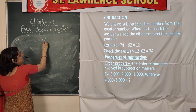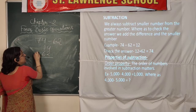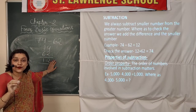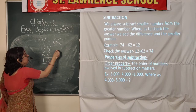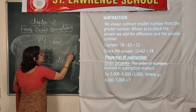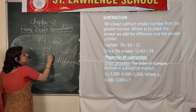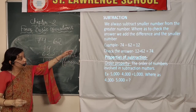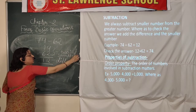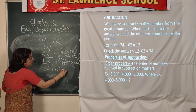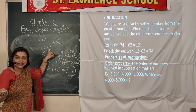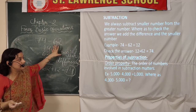Let us take a simple example: 74 minus 62. Writing it in columns: 4 minus 2 is 2, and 7 minus 6 is 1, giving us 12. Now to check whether 12 is correct — 12 is the difference, and 62 is the smaller number. We add them: 2 plus 2 is 4, and 6 plus 1 is 7, giving us 74. This matches our original number 74, so we have verified the answer is correct.